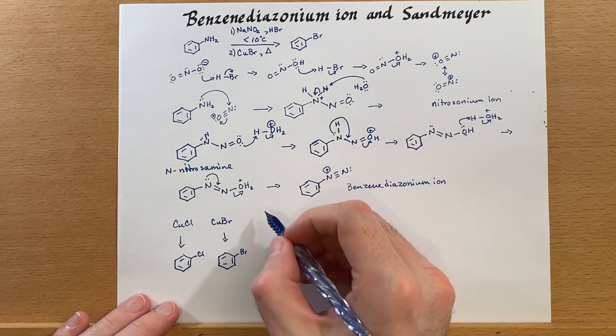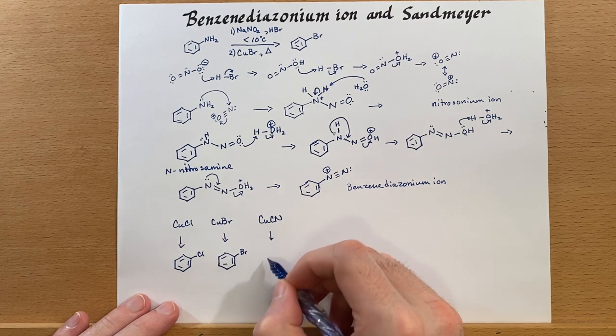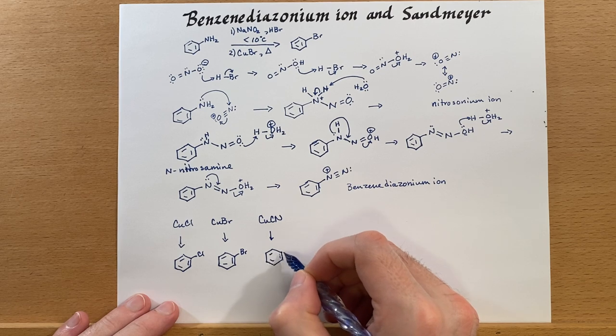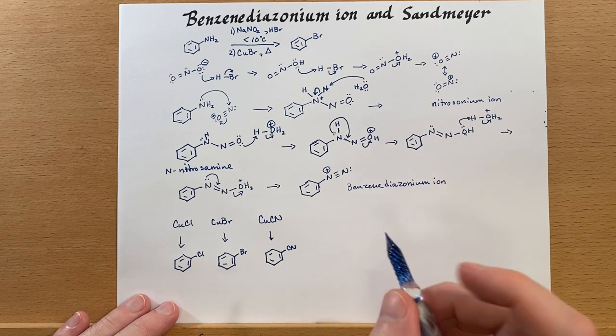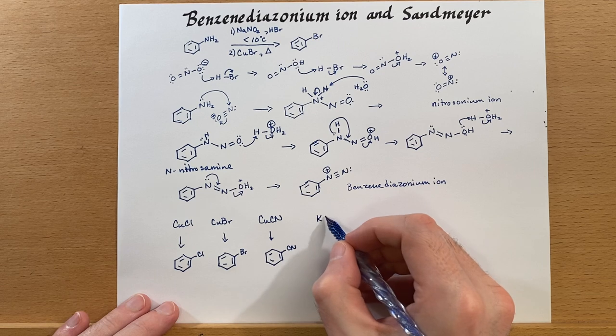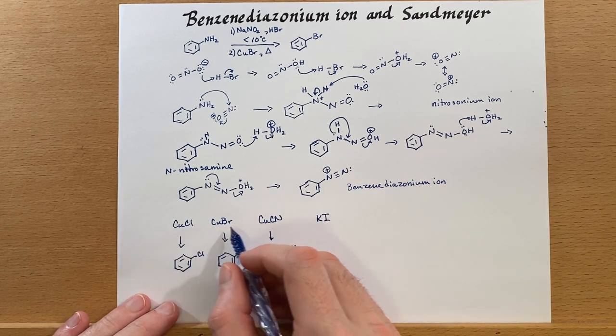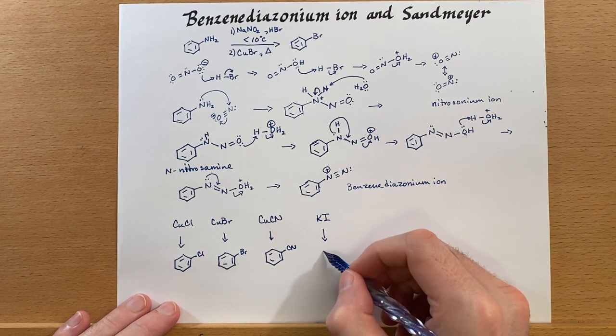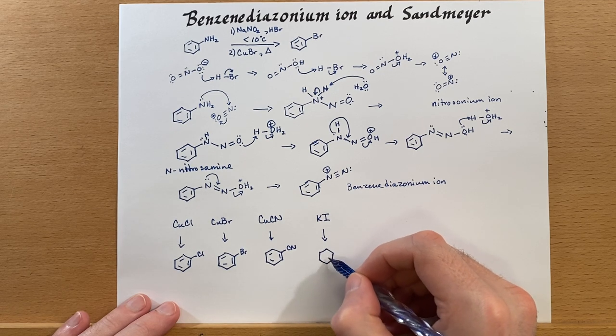We can do the same thing with cyanide. We can do a slightly different reaction to make the iodide. Let's use potassium iodide. In these cases, we really need the copper to help the reaction along. In iodine's case, we can just do it by providing it a source of iodine.